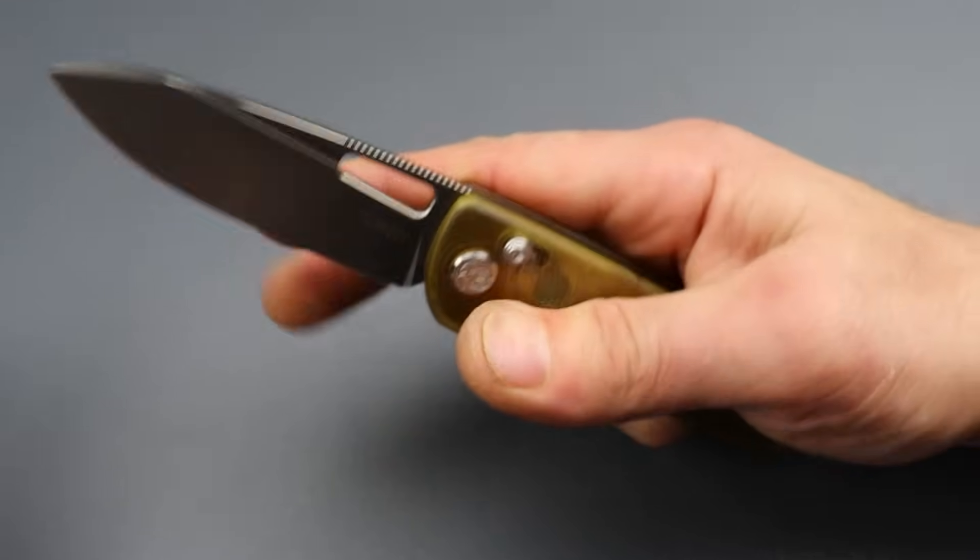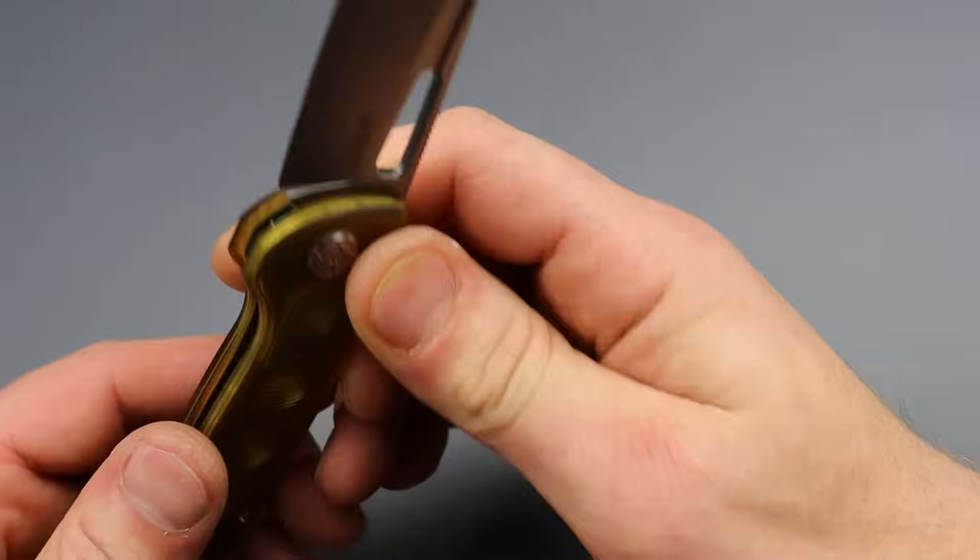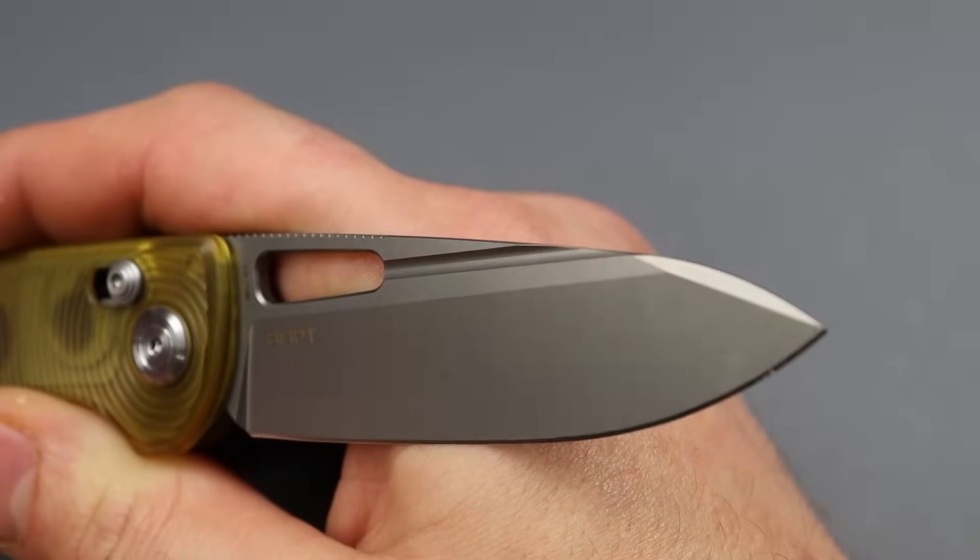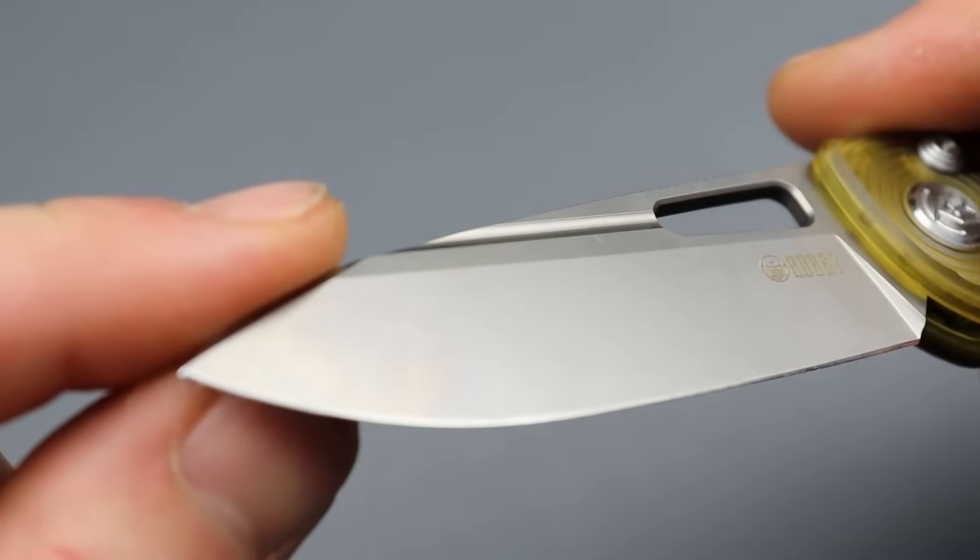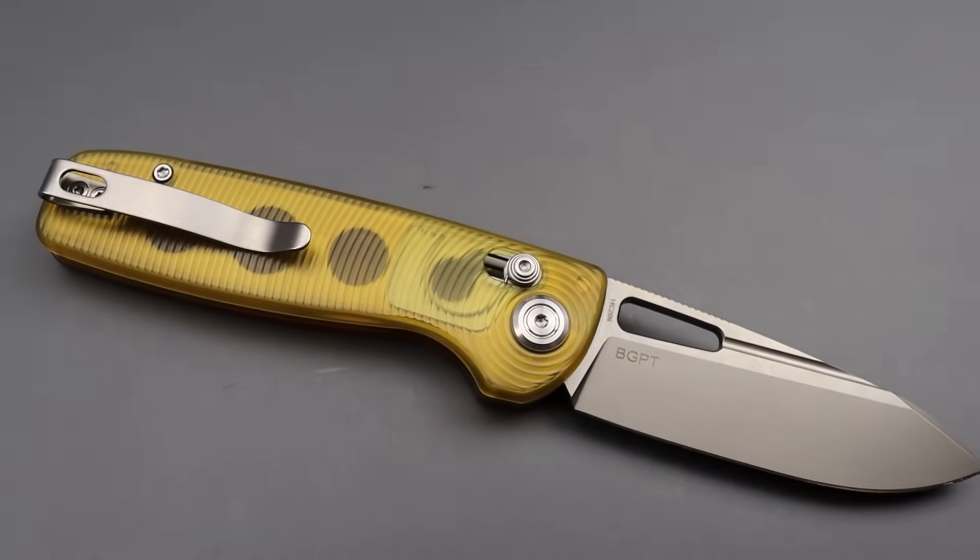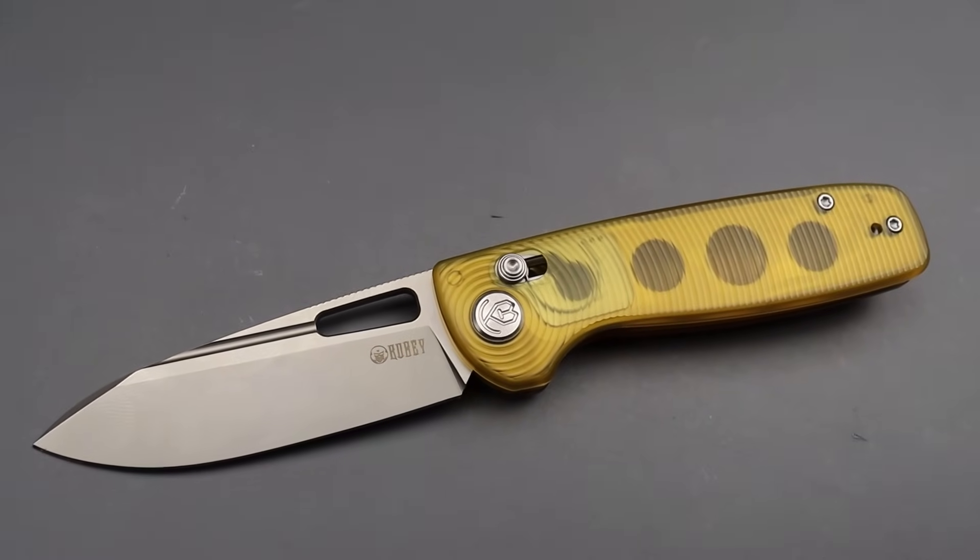It is on bearings. I can tell it's still breaking in. The blade is 14C28N. Beautiful spear point blade. I love this swedge right there. Brings down some stability down to the tip. Decently thin behind the edge, about average, about standard.